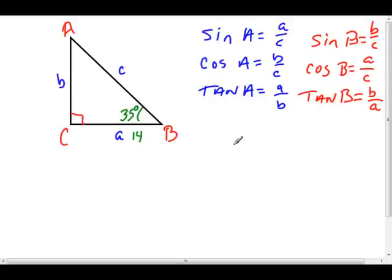In section 5.4, we need to apply this information to find the lengths of the sides of the triangle when we only know one side. In this case, angle B is 35 degrees and side A is 14.